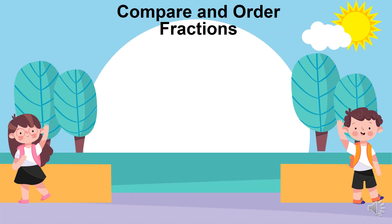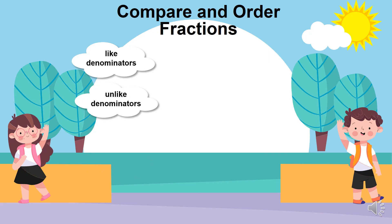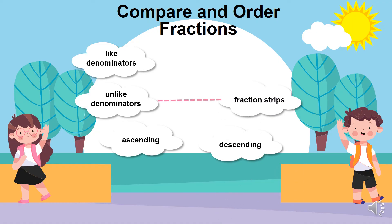We have learned how to compare and order fractions with like denominators, which means the denominators are all the same number, and unlike denominators, which means the denominators are different numbers. In ascending order, the fraction goes up from the smallest to the biggest; in descending order, the fraction goes down beginning with the greatest to the smallest. We have also learned two methods: drawing fraction strips to arrange fractions with unlike denominators, and ordering numerators to arrange fractions with like denominators.